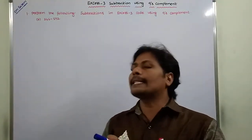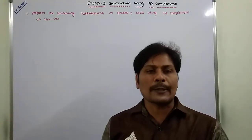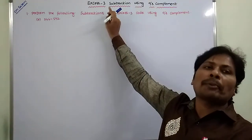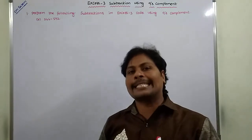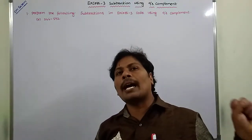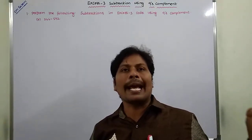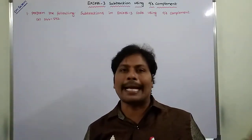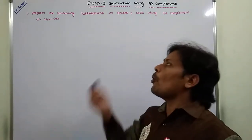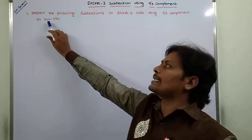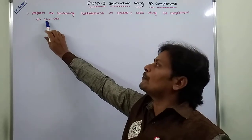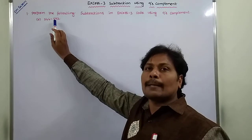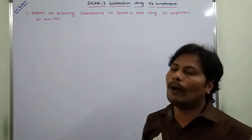Next, in this video, we have to solve another example problem on XS3 subtraction using 9s complement. In the previous video, we already solved one example problem on XS3 subtraction using 9s complement. Now in this video, we have to solve the example problem: 246 minus 592 using XS3 subtraction with 9s complement.